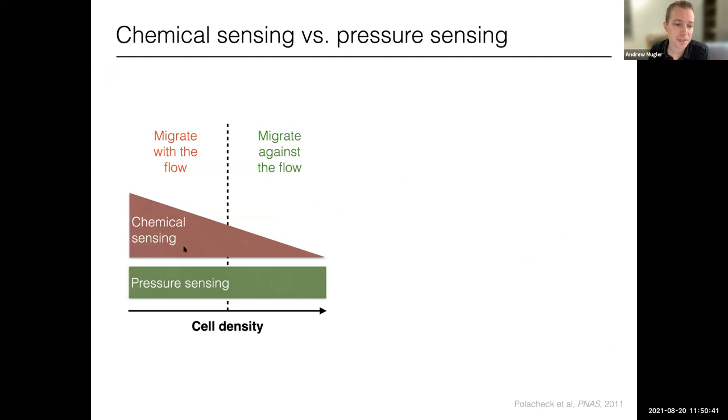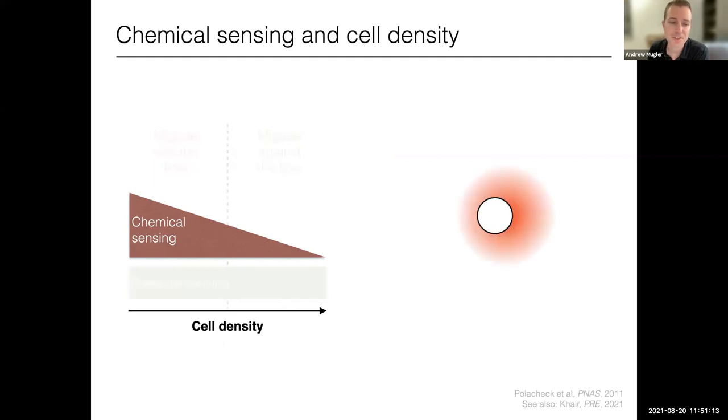And so the overall picture that came out of this study is that, as I said, there's two competing mechanisms, the autologous chemotaxis will migrate with the flow and the pressure sensing against the flow. But the chemical sensing part, the chemotaxis, is cell density dependent, right? And so that means that at low cell densities, chemical sensing wins, at high cell densities, pressure sensing wins, and that's responsible for the change in direction. And the mechanical sensing part is extremely interesting, and we're thinking about it now, but for the rest of the talk, I just want to sort of dig a little deeper into why chemical sensing, this autologous chemotaxis might depend on cell density. And I think it's rather intuitive, right?